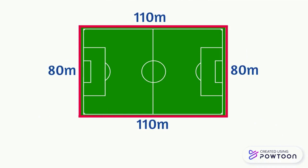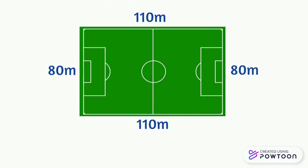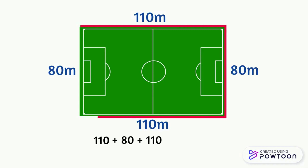Here are the measurements. Then we add up all the sides: 110 plus 80 plus 110 plus 80, which is equal to 380. Don't forget to put the unit of measurement, which is here the meter. So the perimeter of this field is 380 meters.